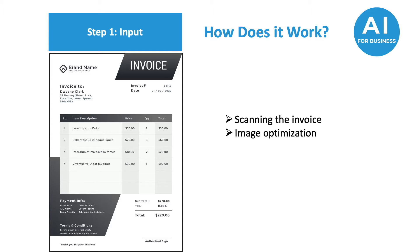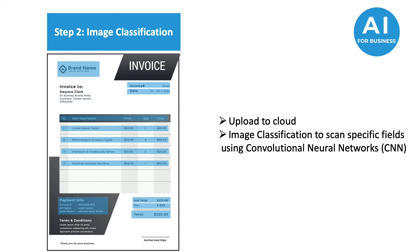The first step is document input. After receiving the paper-based invoice, it is scanned to create an image. The next step is to standardize the image quality and size to optimize it for data extraction. In case the document is already digital, it will still go through the image quality optimization stage. Once the invoice is scanned and optimized, it is uploaded to the cloud where the magic begins.